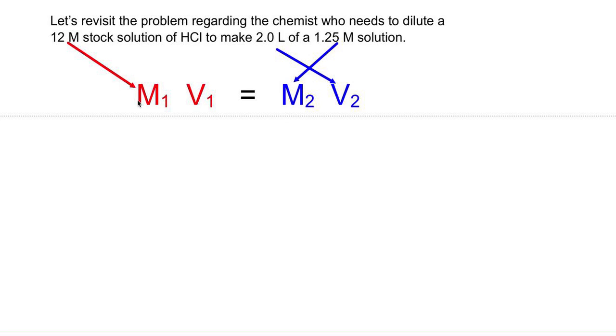So the first thing we do is we write down our equation and then we start plugging numbers in. Now remember any numbers that deal with the stock solution, the strong concentrated solution that we're starting with, goes on the M₁V₁ side and any number that deals with the diluted solution or our final solution is going to go on the M₂V₂ side.